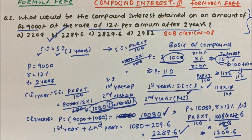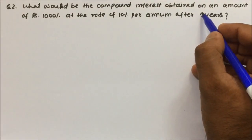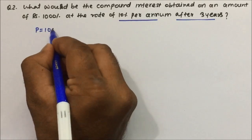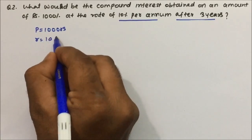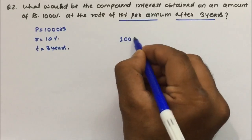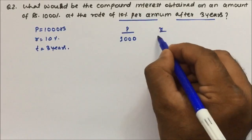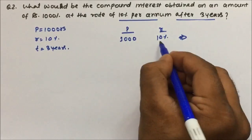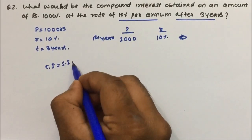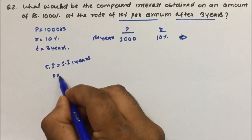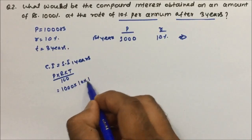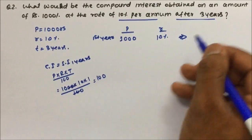Question number two: what would be the compound interest on an amount of 1000 rupees at the rate of 10 percent per annum after three years? Principal is 1000 rupees, rate is 10 percent, time is 3 years. For the first year, using P×R×T/100: 1000×10×1 divided by 100 equals 100 rupees — so first year interest is 100 rupees.